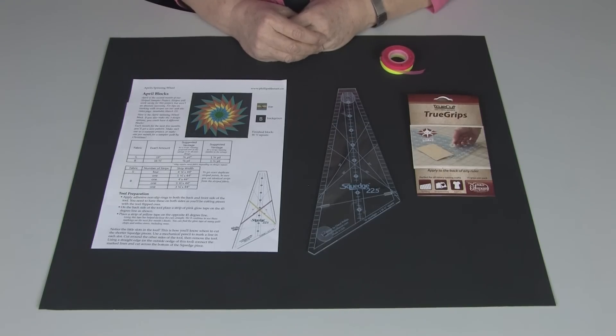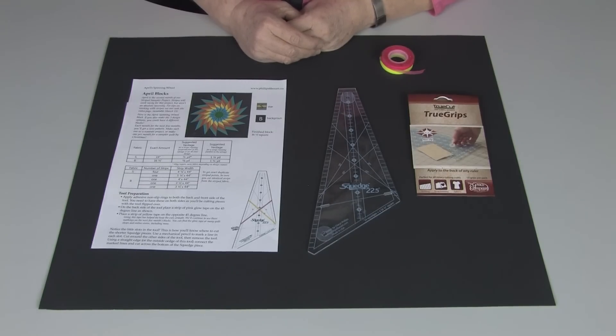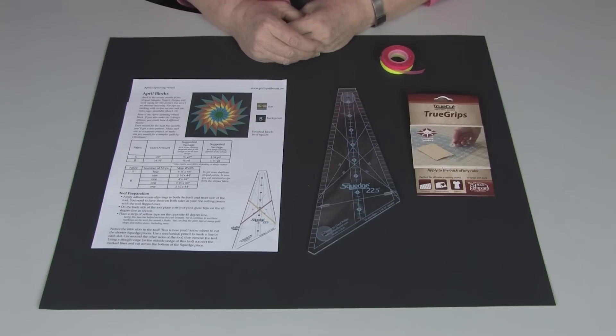Next, we'll need to prepare our squedge tool. This squedge tool is a 22.5 degree. It takes 16 pieces to make your square. And a squedge is a wedge that makes a square. How do we prepare it?